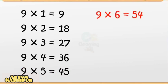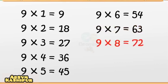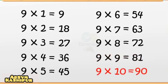Nine sixes are fifty-four. Nine sixes are fifty-four. Nine sevens are sixty-three. Nine sevens are sixty-three. Nine eights are seventy-two. Nine eights are seventy-two. Nine nines are eighty-one. Nine nines are eighty-one. Nine tens are ninety. Nine tens are ninety.